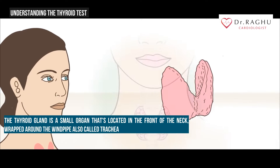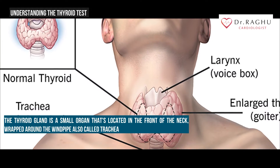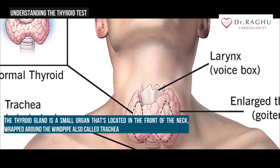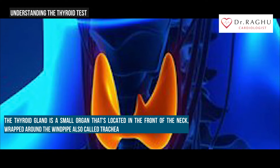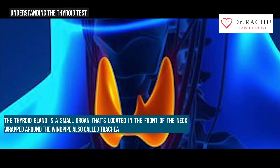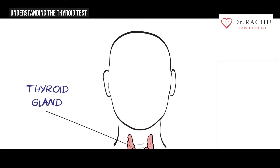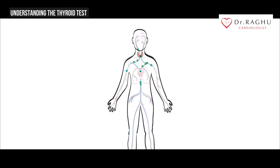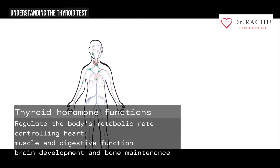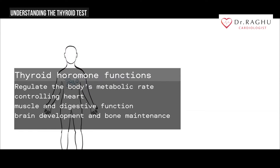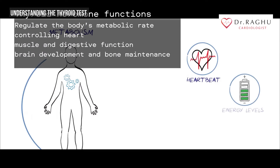The thyroid gland is a small organ located in the front of the neck, wrapped around the windpipe, also called the trachea. It's shaped like a butterfly — smaller in the middle with two wide wings that extend around the sides of the throat. Like many other glands, the thyroid makes hormones that help control many vital functions of the body.